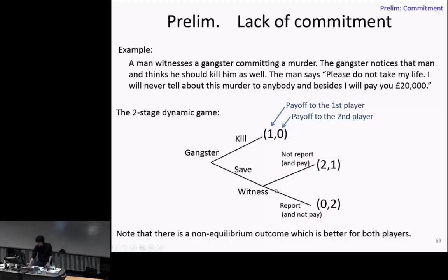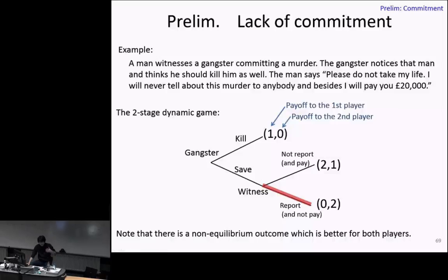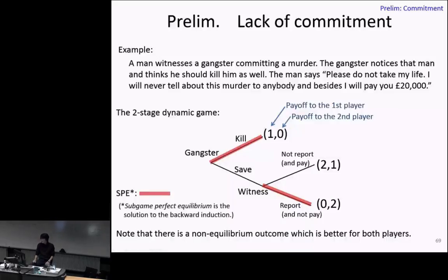Let's solve this game by backward induction. Once it is the witness's turn, the payoffs are as follows: the first numbers are the gangster's payoffs and the second are the witness's payoffs. The witness prefers to report to the police rather than pay £20,000. Knowing that, the gangster compares his payoff from killing the witness versus saving him — one versus zero — and killing is better, so the gangster kills the witness. This is the sub-game perfect equilibrium of this dynamic game.